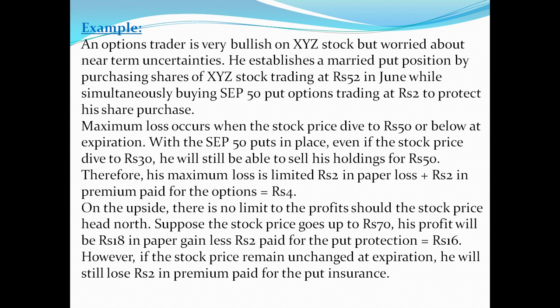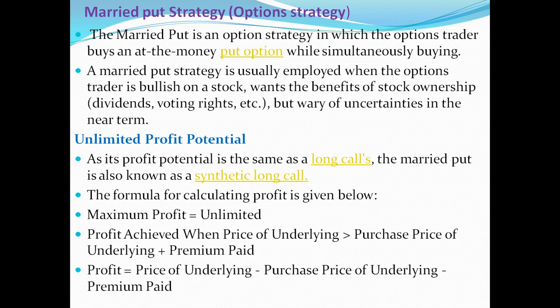On the upside, there is no limit to the profit should the stock price head north. Suppose the stock price goes up to rupees 70 — his profit will be rupees 18 in paper gain, less rupees 2 paid for the put protection, equal to rupees 16. However, if the stock price remains unchanged at expiry, he will still lose rupees 2 in premium for the put insurance.